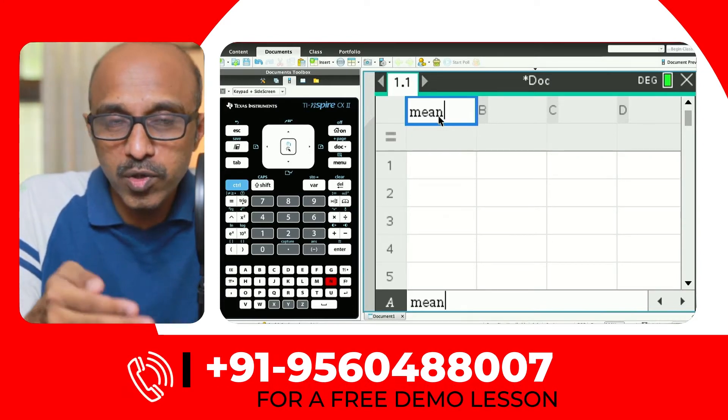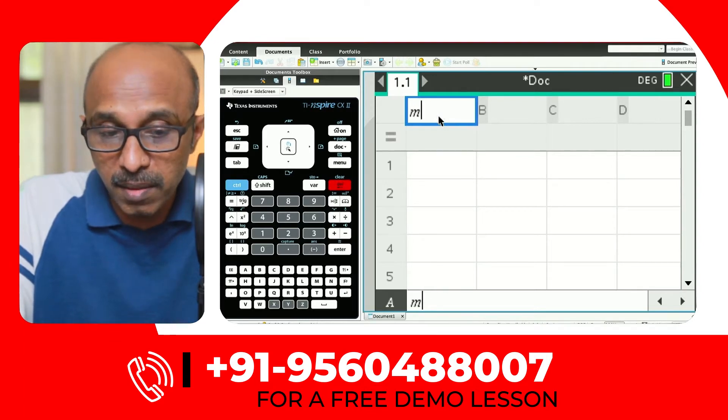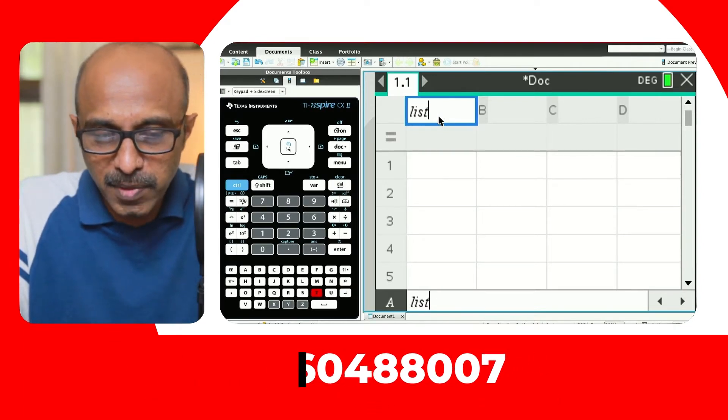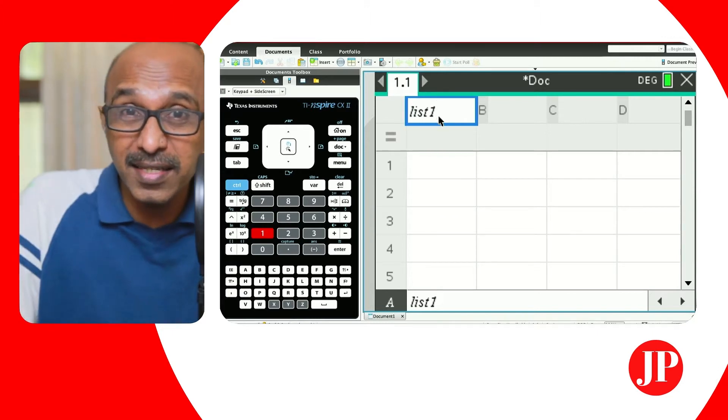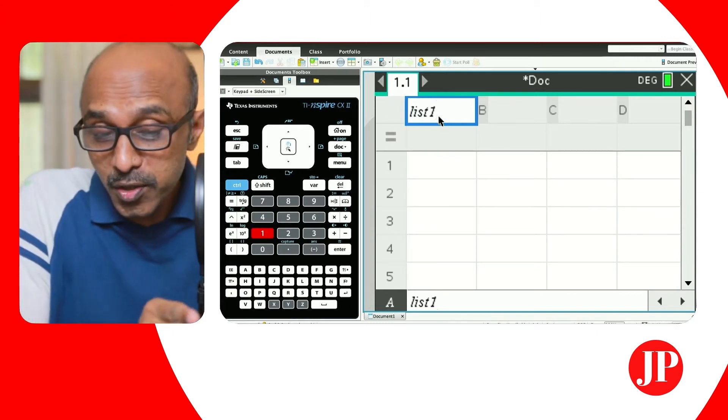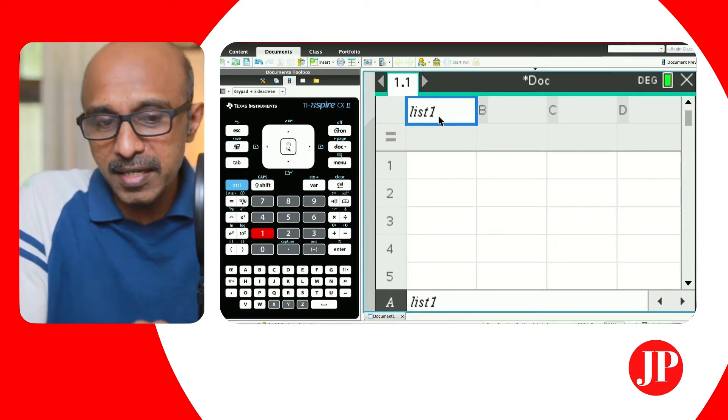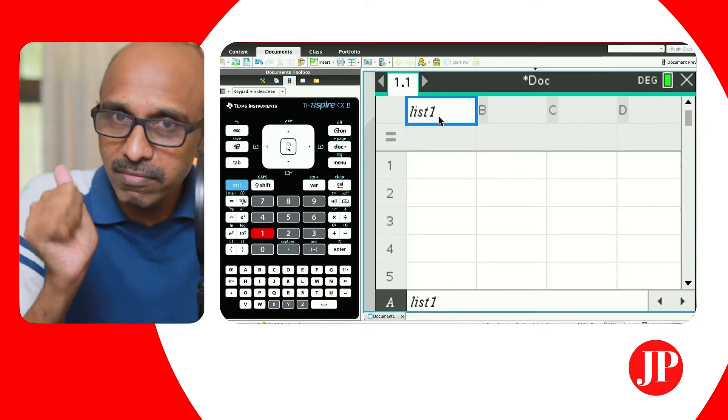The calculator recognizes that mean is a function. So you should not enter a column name that is already assigned to one of the calculator inbuilt functions. So mean will not count. I'm just going to give it a very simple name. I'm just going to call it list one. And even when I say list one, can you see it's still italicized? So that's okay.